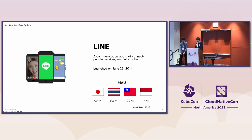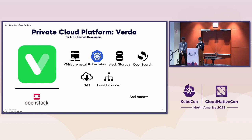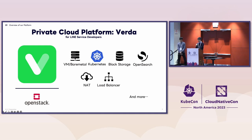LINE is a communication app that connects people, services, and information through various services, especially free messages, voice, and video calls. LINE was launched in 2011 and we now have over 170 million users in a total of four major markets. Almost all of our services are running in our data centers. Verda is our private cloud platform that helps LINE service developers build and run their services on our infrastructure. Our mission is to build a platform that enables infrastructure automation for both provisioning and operation. Verda consists of infrastructure as a service, like VM or bare metal, platform as a service, and a set of managed services, just like the various public cloud platforms.